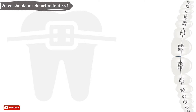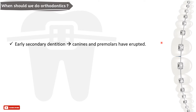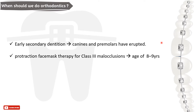When should orthodontic treatment start? Most orthodontic treatments are not started until the early secondary dentition, when the canines and premolars have erupted. At this stage, the response to orthodontic forces is more rapid, appliances are better tolerated, and growth can be utilized to help affect sagittal or vertical changes. However, there is evidence that protraction face mask therapy for Class 3 malocclusion achieves more skeletal change around the age of 8 to 9 years than in older children.